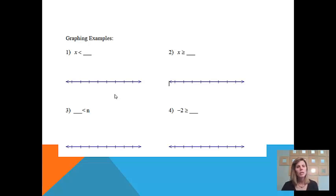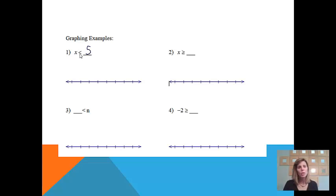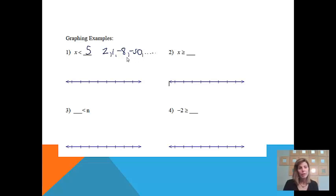What we're going to be doing now is looking at some different problems where we have more than one answer — why do we graph it and how do we make it look? So this first one, I'll put a 5 there. It says x is less than 5. So I'm trying to think of all the numbers that are less than 5: 2, 1, negative 8, negative 50 — I could keep going on forever. I would never run out of choices. So what we want to do is graph it to show all of the choices that would work in this problem.